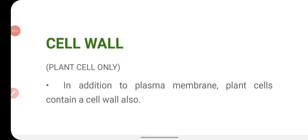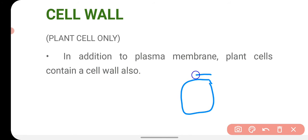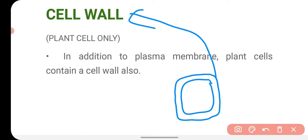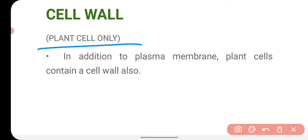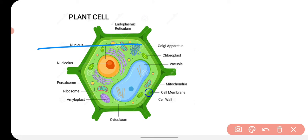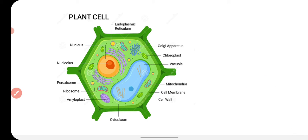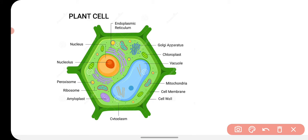Now we will talk about the cell wall. In addition to the plasma membrane, plant cells also contain a cell wall. If you observe a plant cell, you will see that outside the plasma membrane there is another layer called the cell wall. This cell wall is dead and is found only in plant cells. Animal cells do not have a cell wall.